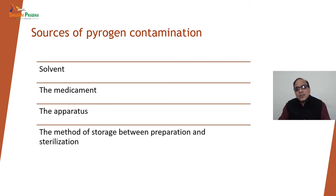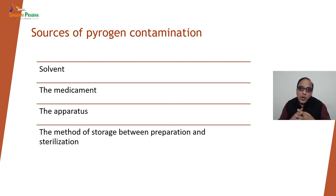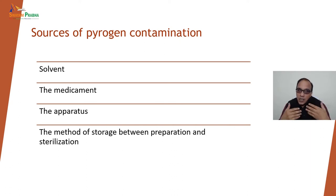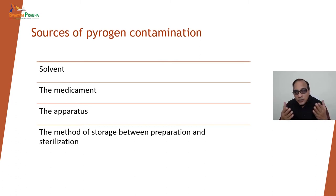What are the sources of pyrogen contamination? Solvents are the most important source. The medicament, even the API, may have pyrogens when raw material is in storage before use and may be contaminated. The apparatus, during in-process operations or due to environmental exposure and contact with personnel, may also have pyrogens. The method of storage between preparation and sterilization, or in storage of raw materials, may also act as a source of pyrogens.